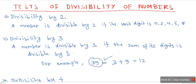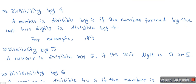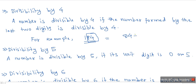Now let's see the divisibility of a number by 4. A number is divisible by 4 if the number formed by the last two digits of the given number is divisible by 4. For example, take the number 184: the number formed by the last two digits is 84, and 84 is divisible by 4, so 184 is divisible by 4.